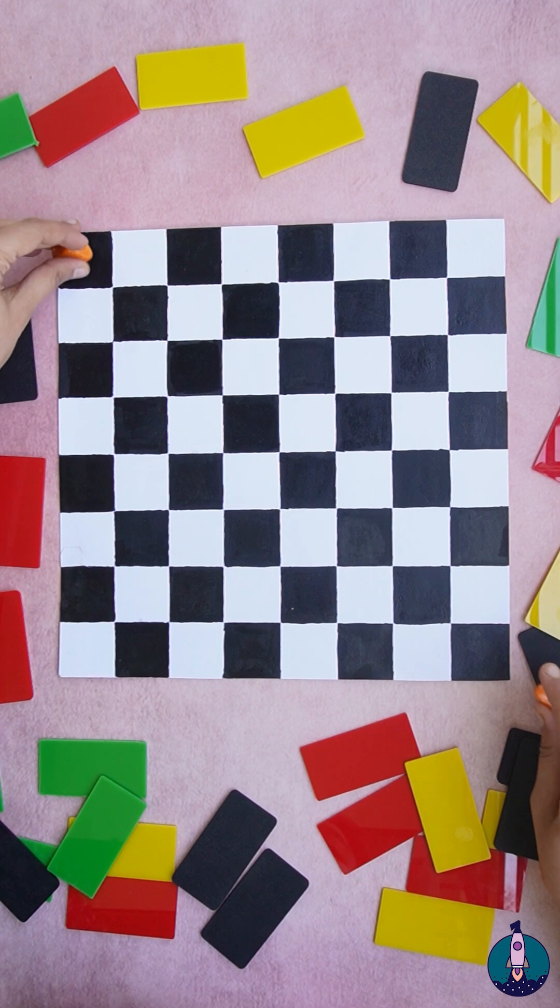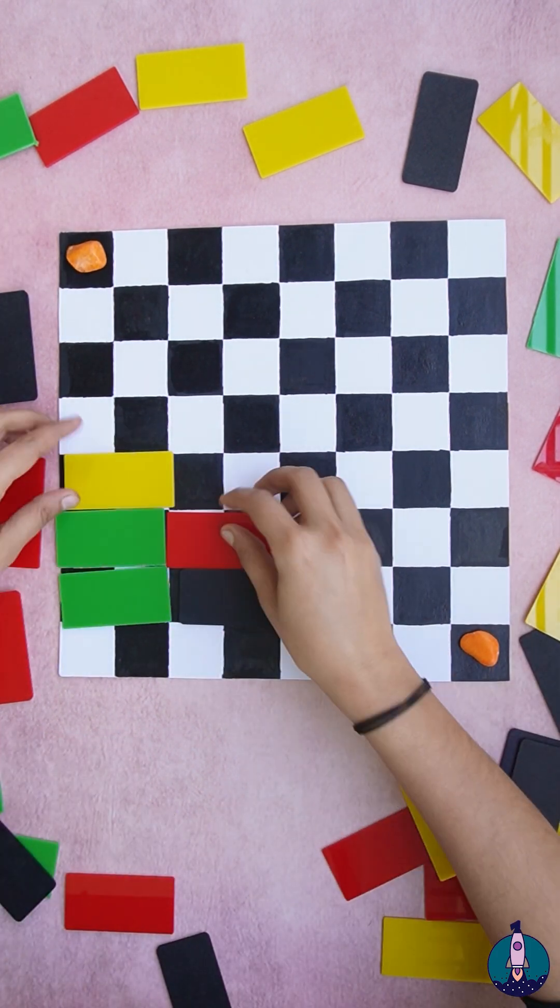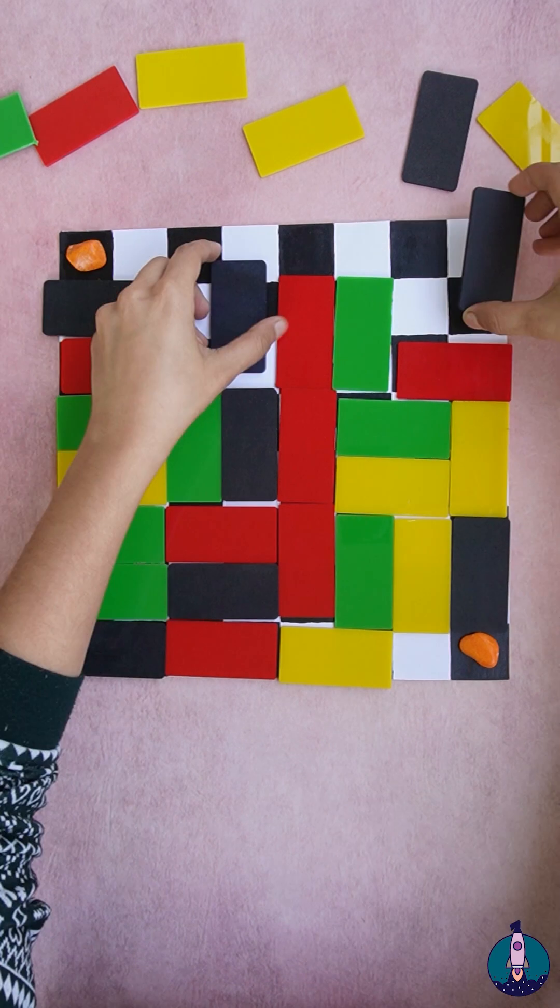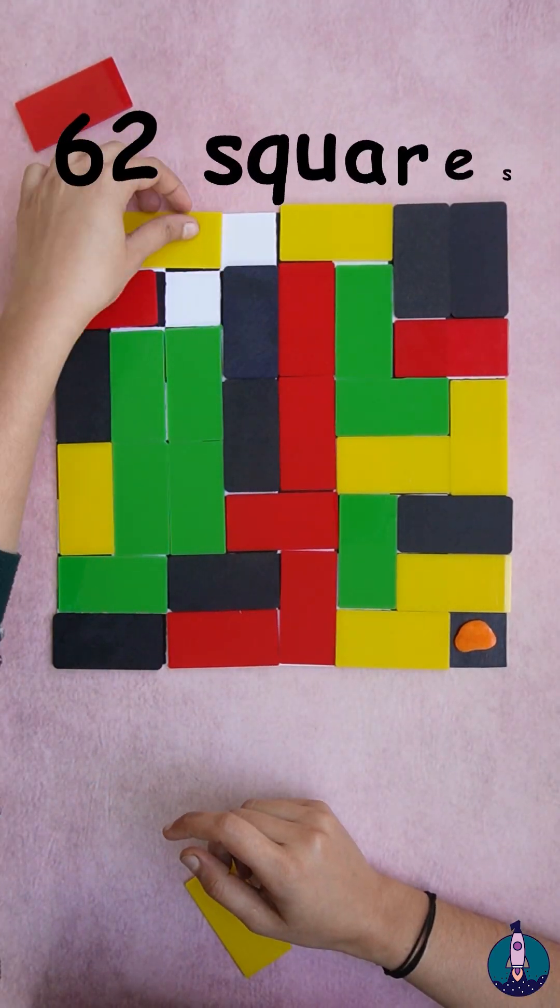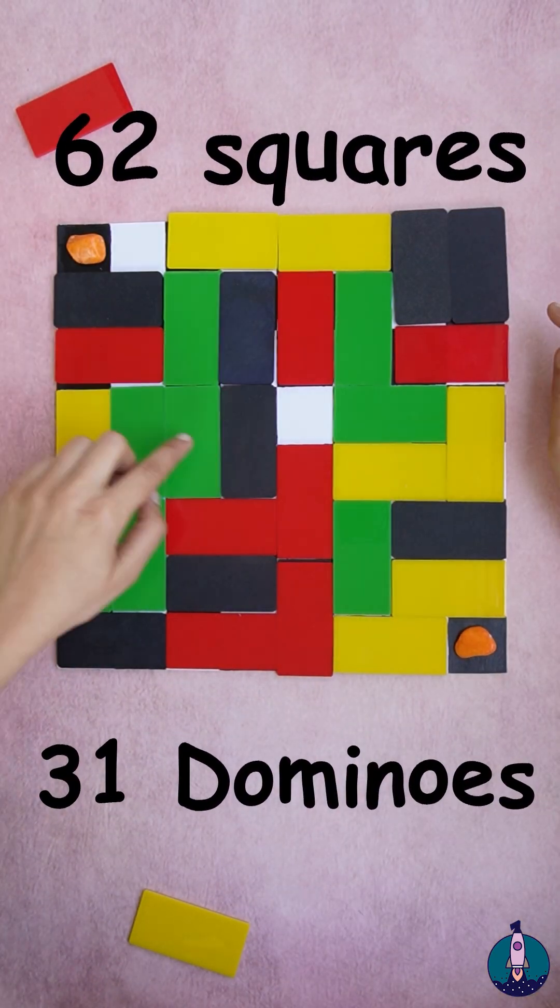Now block these two opposite corners and try to cover all the squares on the chessboard except the blocked ones. To cover these 62 squares, we need 31 dominoes.